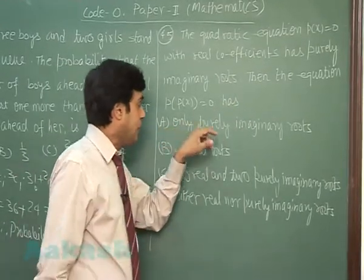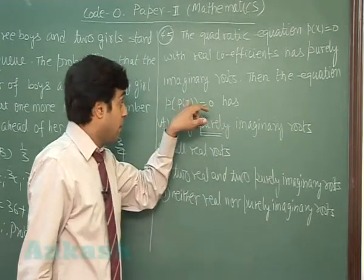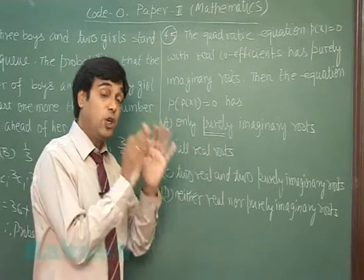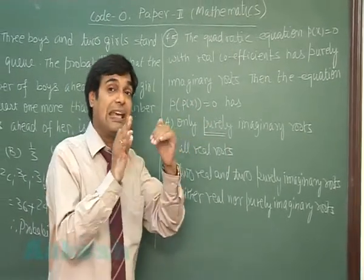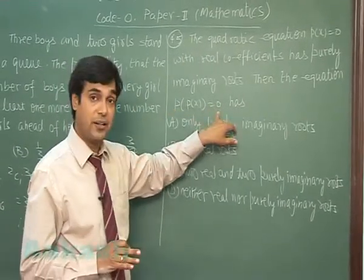So option A says only purely imaginary roots. This term 'purely' we need to understand. Purely means it should be of the form 0 plus k iota, means real part should be 0, which is not a necessity for it.